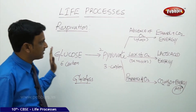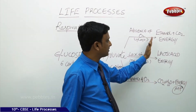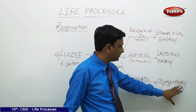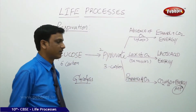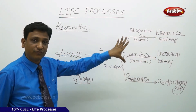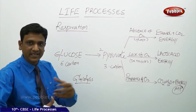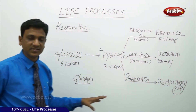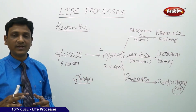Whatever the type of respiration, the final goal is energy. In anaerobic respiration, less energy is produced along with byproducts like ethanol. In aerobic respiration, energy is released in large quantity along with carbon dioxide and water. In all cases, the energy is released in a form the cells can readily use — that is ATP, adenosine triphosphate. So energy is finally released in the form of ATP.